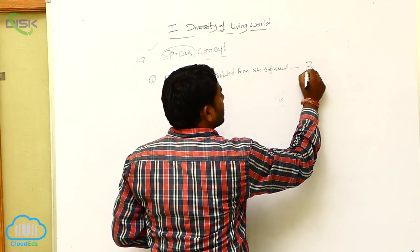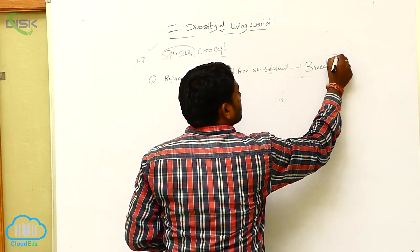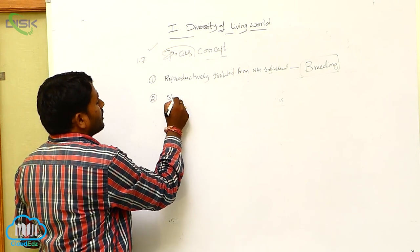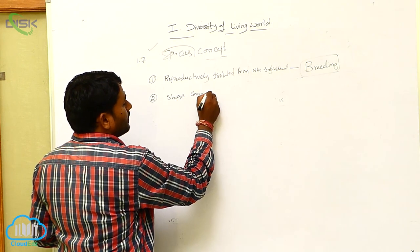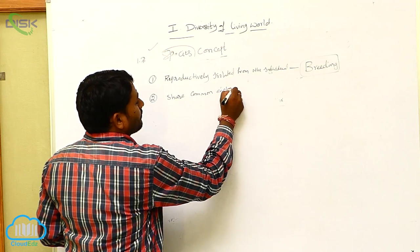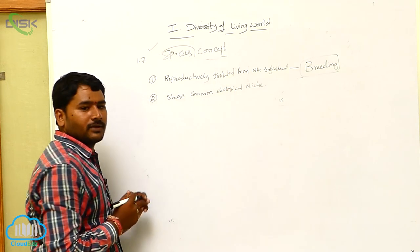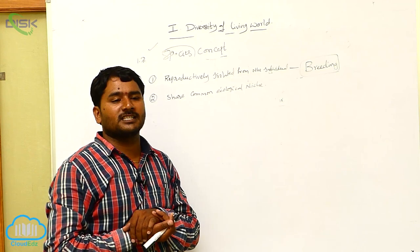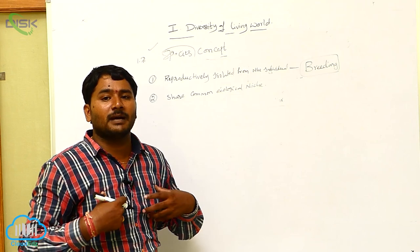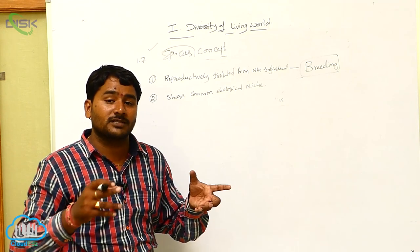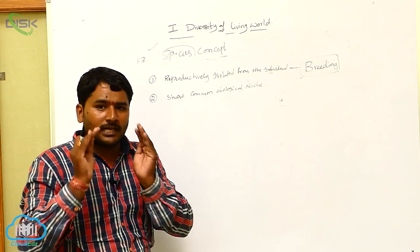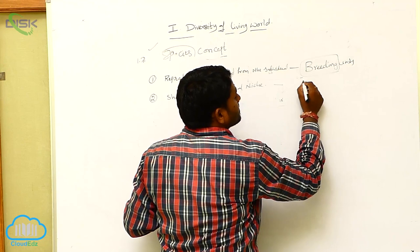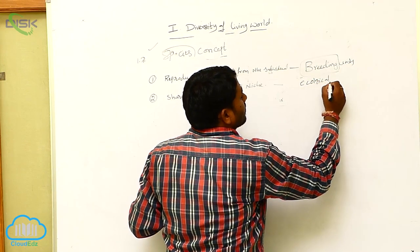We are considering this as a breeding unit. Next, they share a common ecological niche. Niche is the personal profession of the organism — for example, man is omnivore, lion is carnivore. So the individuals belonging to a species share a common ecological niche. This is called the ecological unit.